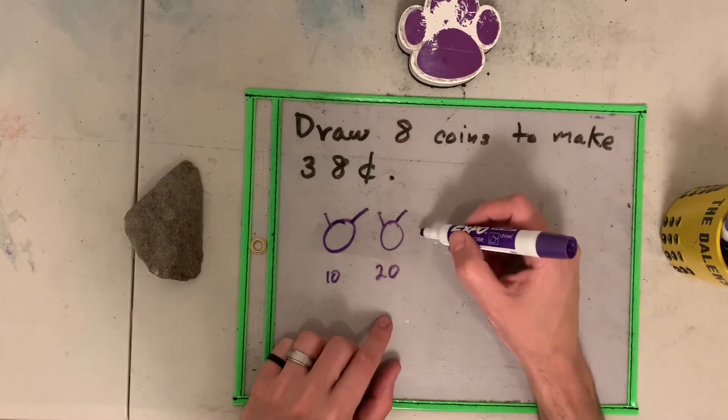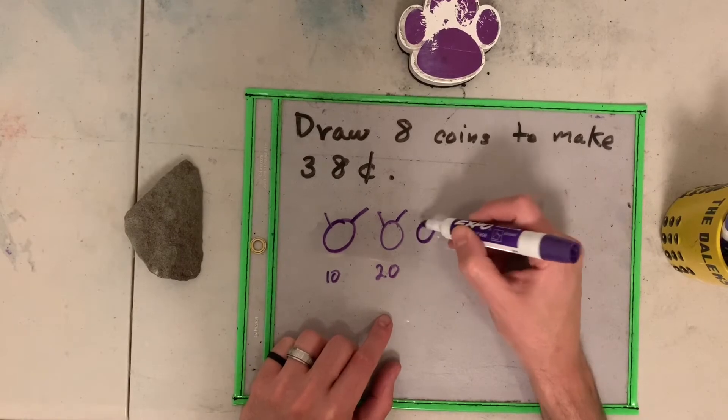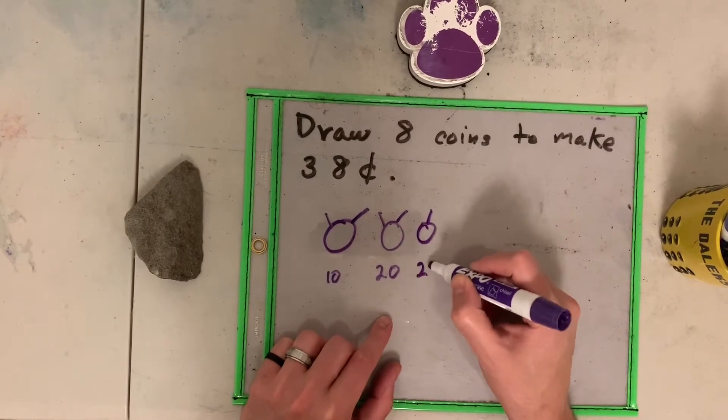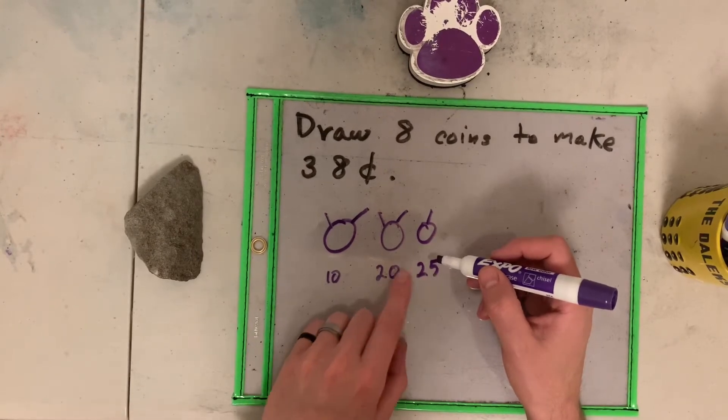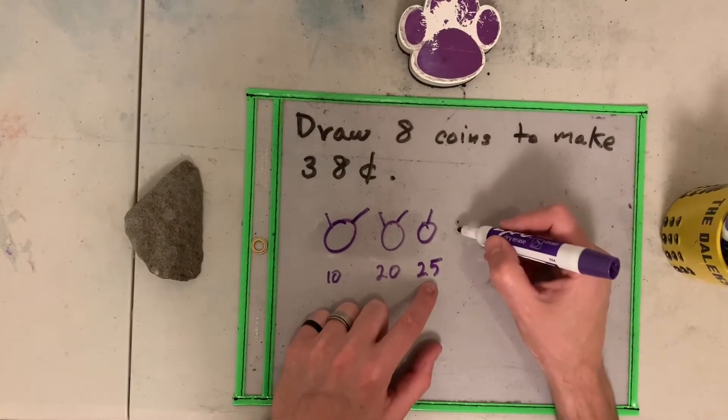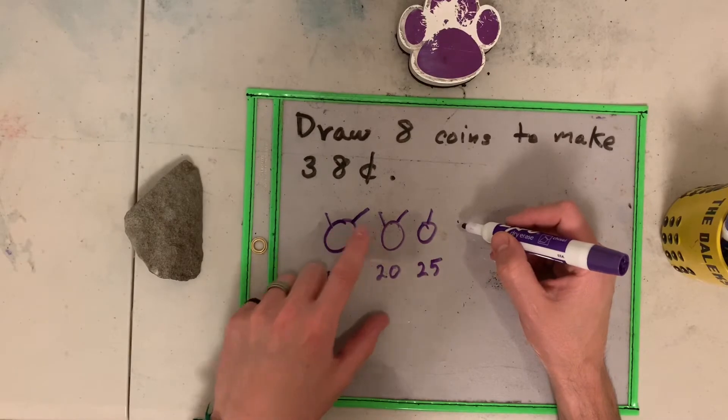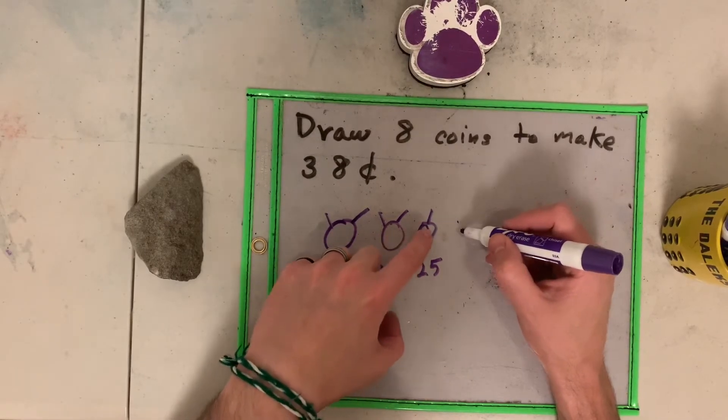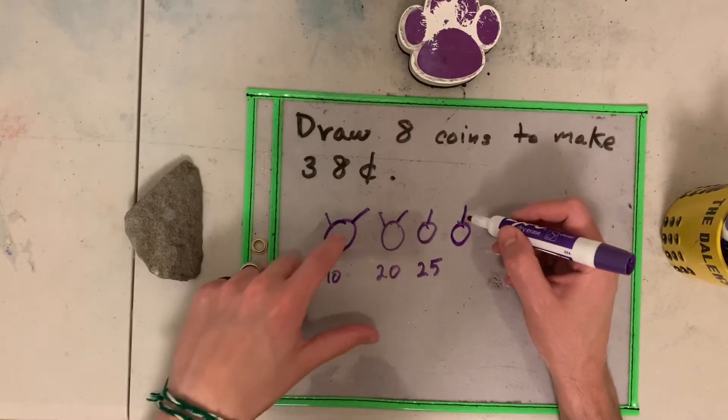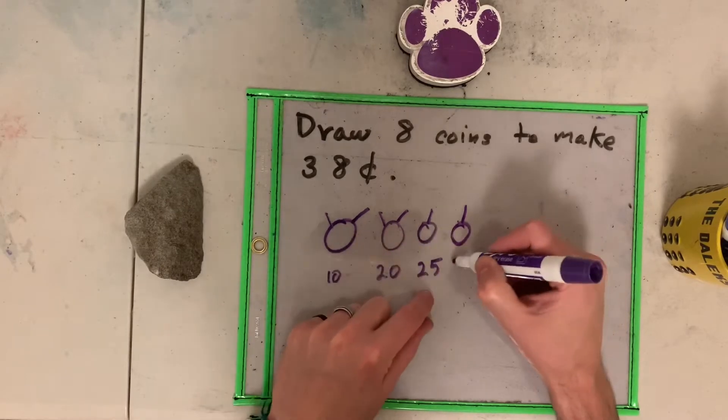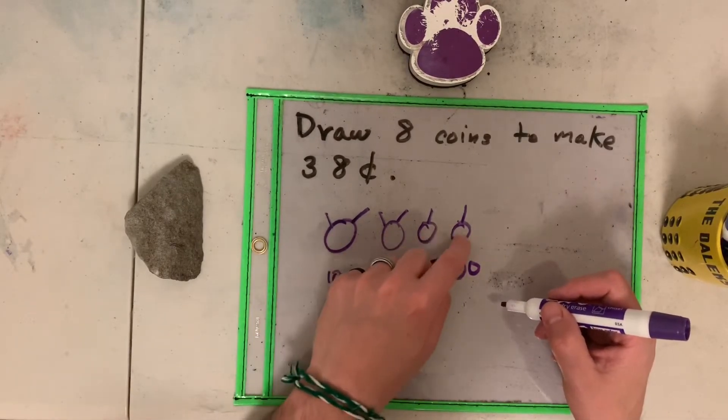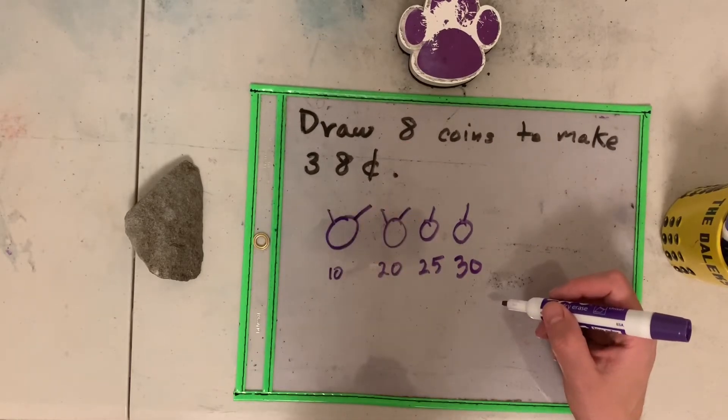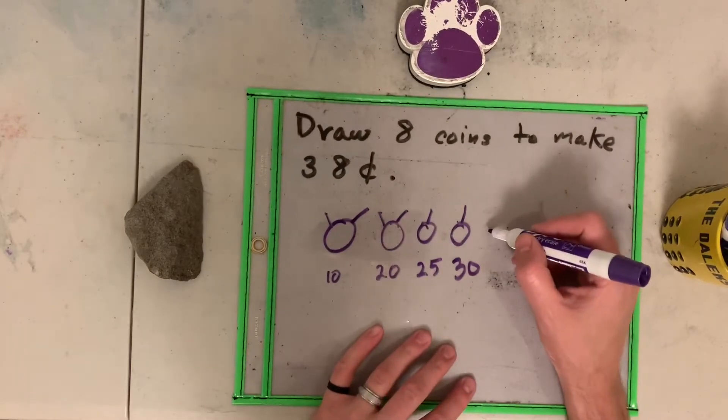I'm going to add now a nickel. One nickel, this means this is twenty-five. Then we have ten, twenty, twenty-five. Let's add another nickel. So we have ten, twenty, twenty-five, thirty cents. Thirty cents. We have one, two, three, four. I need eight coins. I have four coins. Let's add another nickel.